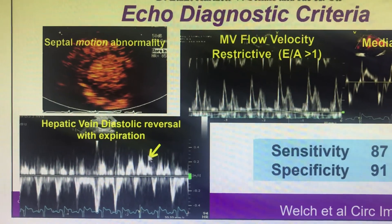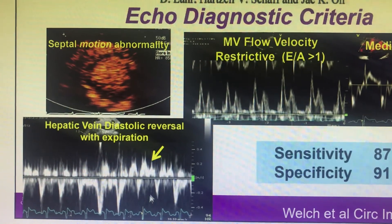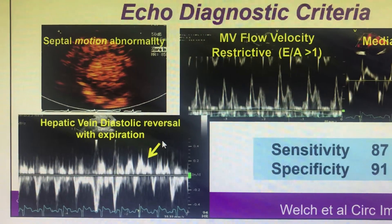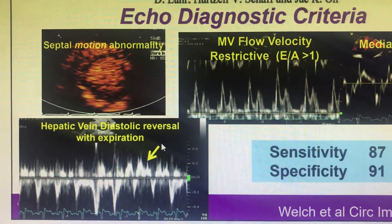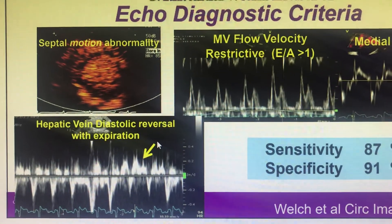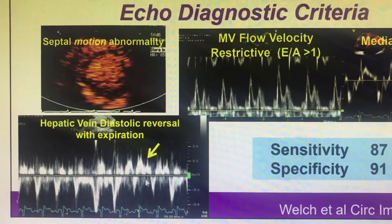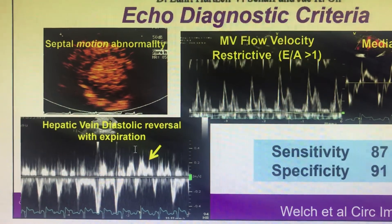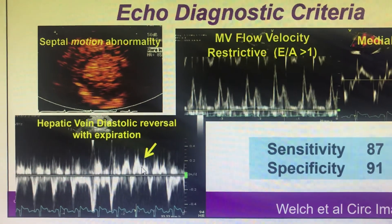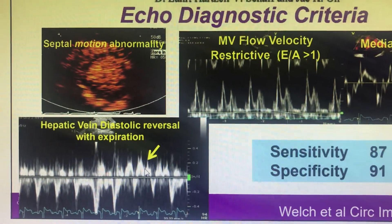In the diastolic reversal pattern, the systolic wave is intact — moving towards the heart — but the diastolic wave, which should also go towards the heart, is instead going away from the heart. This is due to sudden constriction of the pericardium causing sudden collapse of blood moving towards the ventricle in mid-diastole. The ventricle cannot accommodate any more blood and it reverses back into the veins — this is called hepatic vein diastolic flow reversal in expiration.